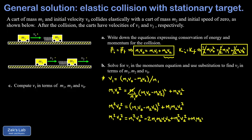A useful mental check here: every term should have the same units — two factors of mass and two factors of velocity — which confirms no algebraic errors. Now notice that the m1-squared*v_naught-squared on the left equals the first term on the right, so those cancel to zero. On the right-hand side all remaining terms contain at least one factor of v2.